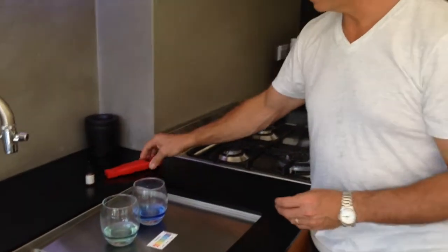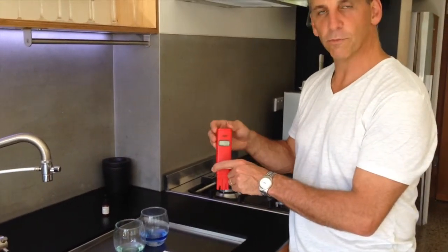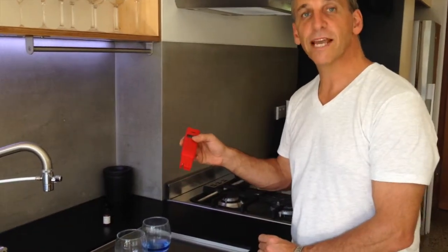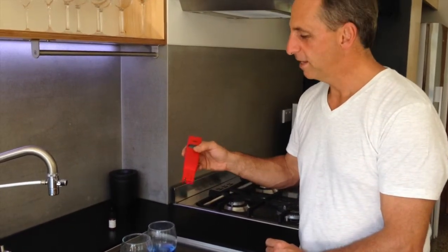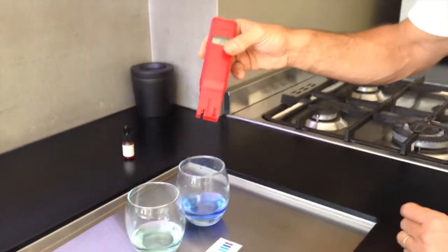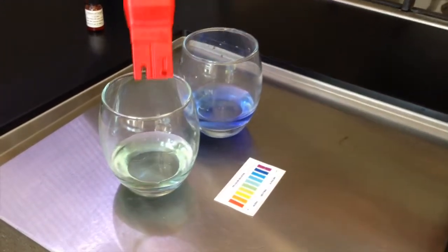The next test we're going to do is measure the ORP of the water. This is just a standard ORP meter you can get online. This measures the level of antioxidants in the water. Antioxidants are great for fighting free radicals and chronic inflammation.